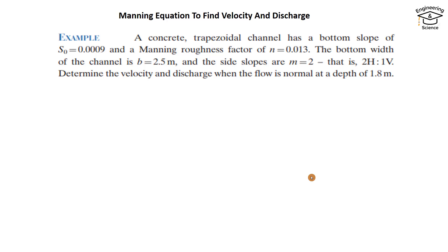Hello everyone, today I want to show you how we can use the Manning equation to find velocity and discharge. We have this example: a concrete trapezoidal channel has a bottom slope of S₀ = 0.0009 and a Manning roughness factor n = 0.013.